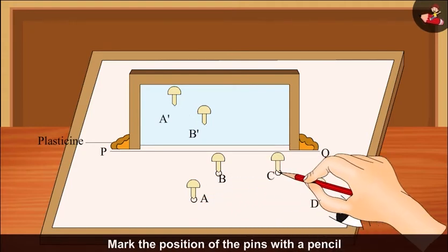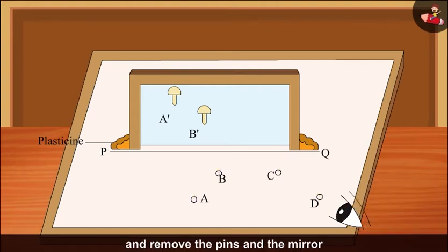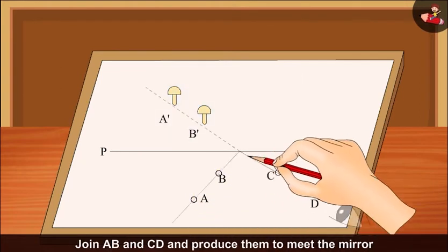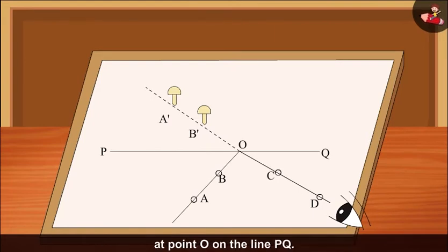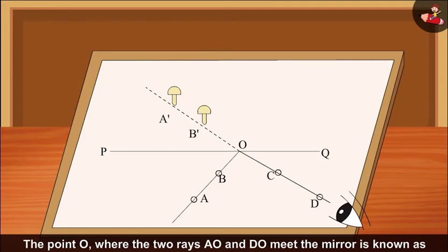Mark the position of the pins with a pencil and remove the pins and the mirror. Join AB and CD and produce them to meet the mirror at point O on the line PQ. The point O where the two rays AO and DO meet.